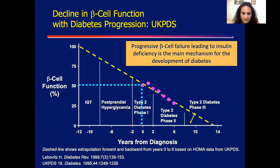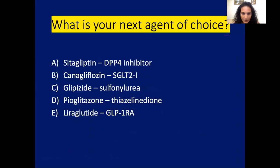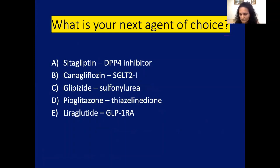So what would be your next agent of choice? He failed metformin, he's been doing exercise, working on his diet, but his A1C is back up again — metformin controlled him for a little bit but he failed monotherapy. What would be your next agent of choice?